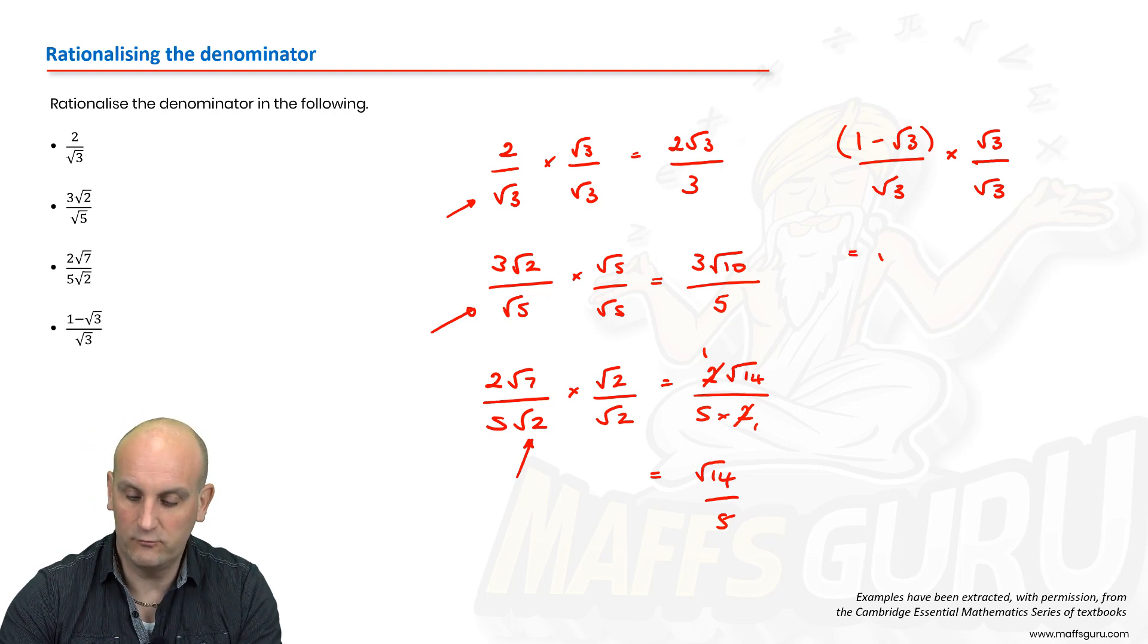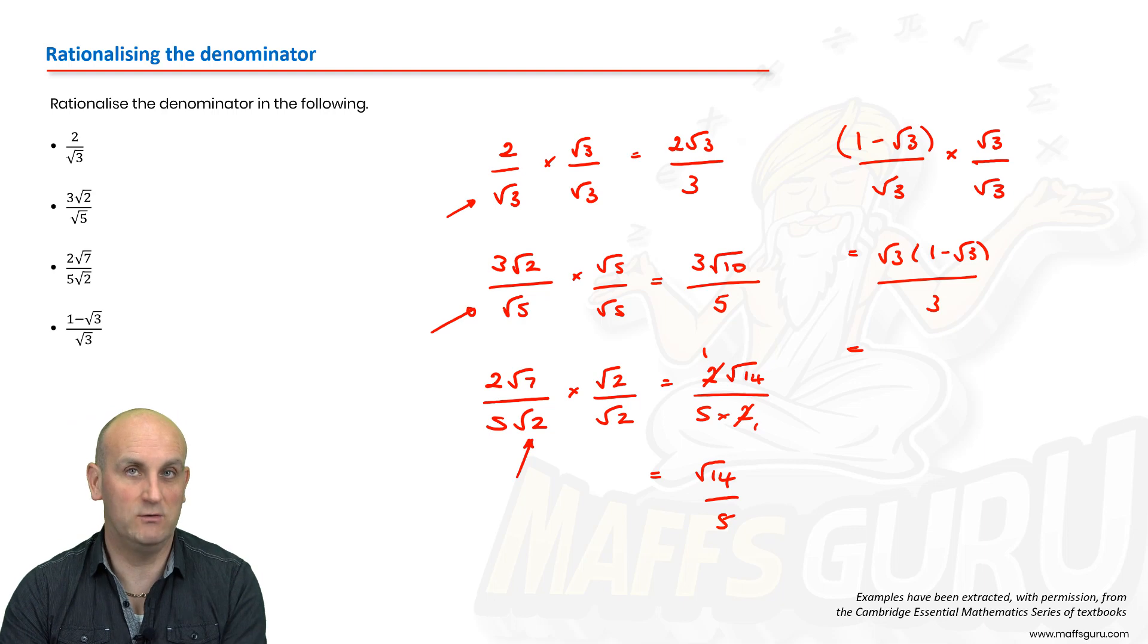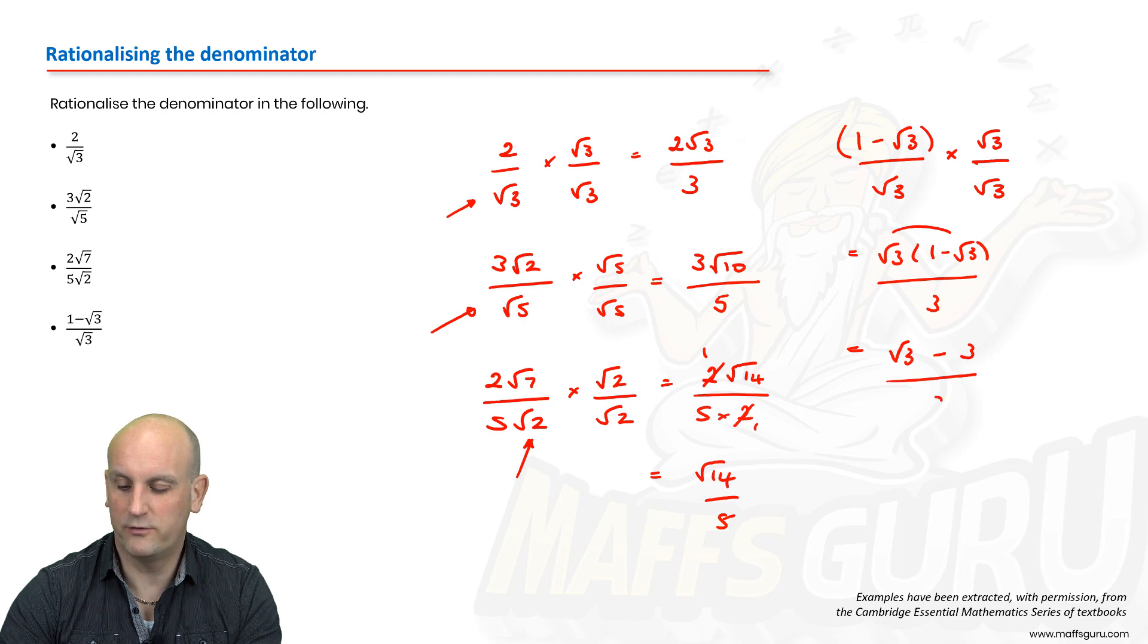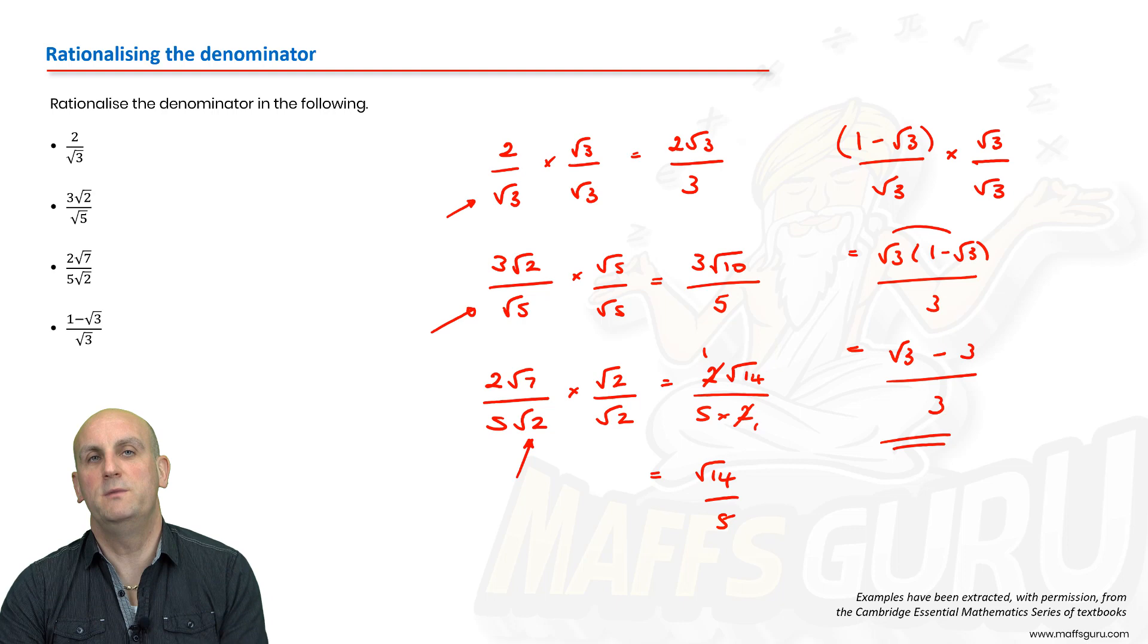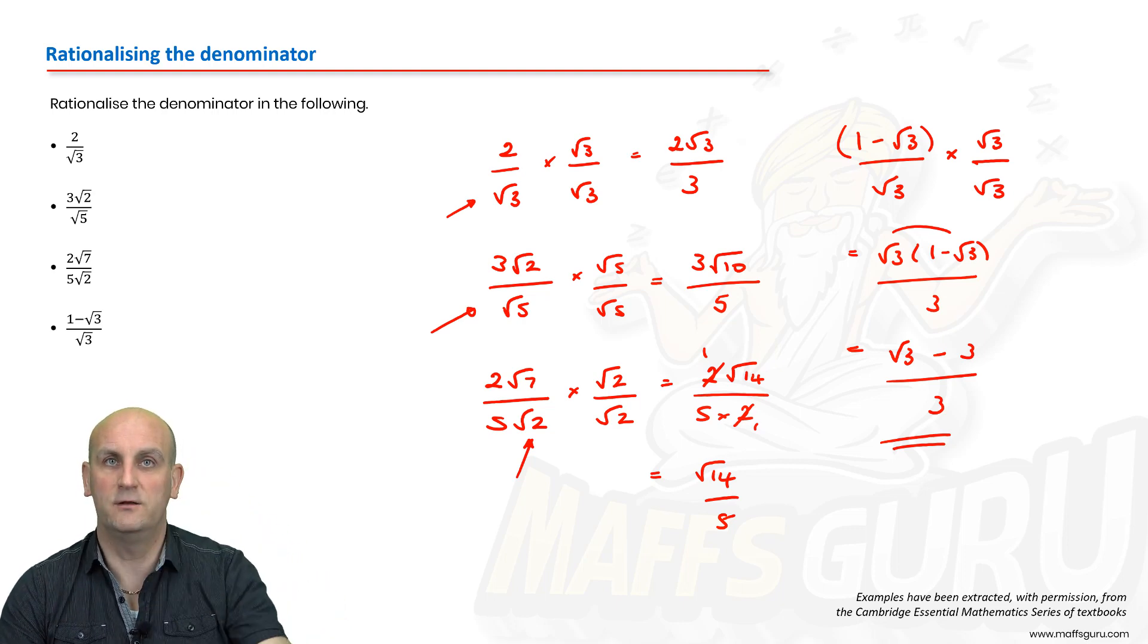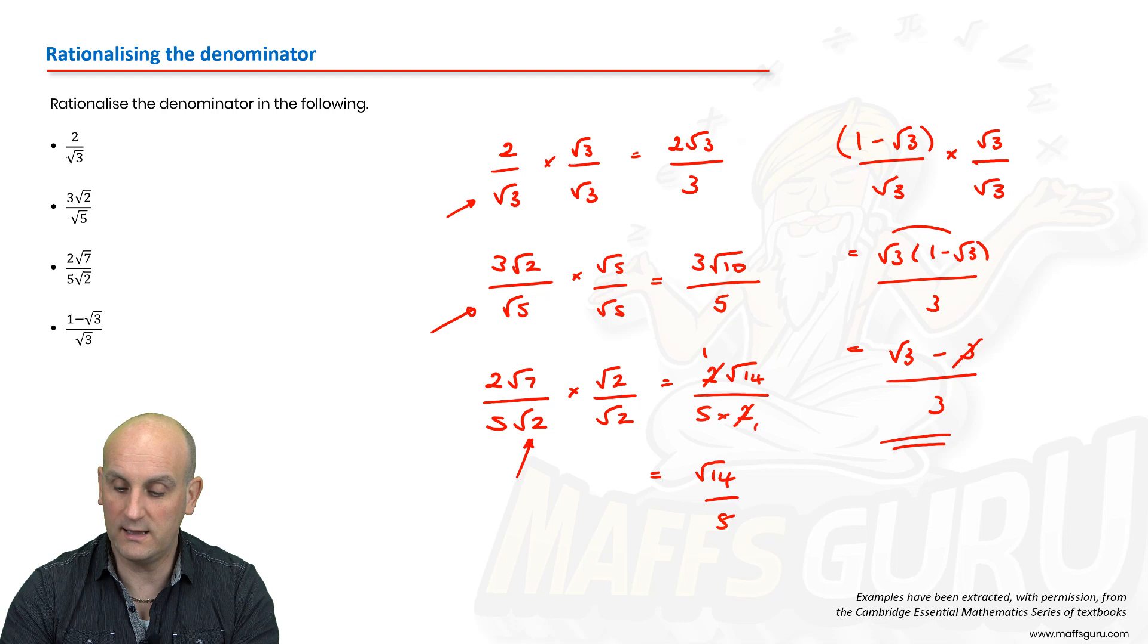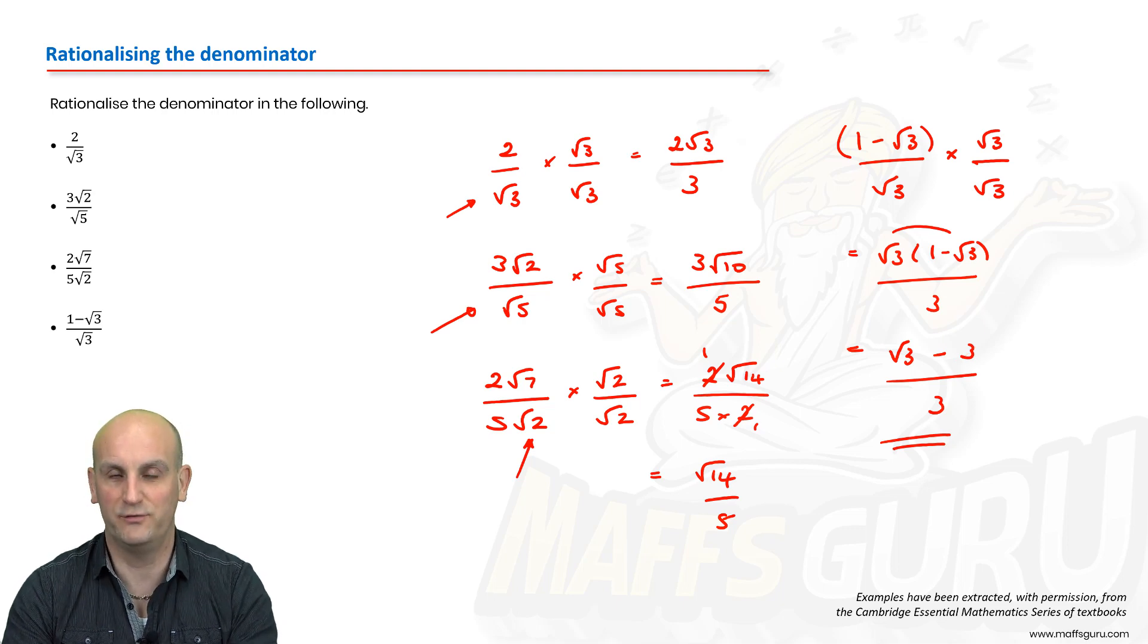I'm now going to end up as root 3 multiplied by 1 minus root 3 divided by root 3 times root 3, which is 3. You could leave it that way. The question generally will give you some sort of indication of the format it wants the answer in. That would be perfectly acceptable as an answer, but I'm going to use the distributive law and multiply that out. So root 3 times 1 gives me root 3 minus, and root 3 times root 3 gives me 3 on 3. Please remember you can only cancel fractions when the numerator and the denominator are all multiplied together. While there is seemingly a 3 in each of these terms, you can't cancel them down. Please be very careful to make sure that you only cancel things down when you need to.